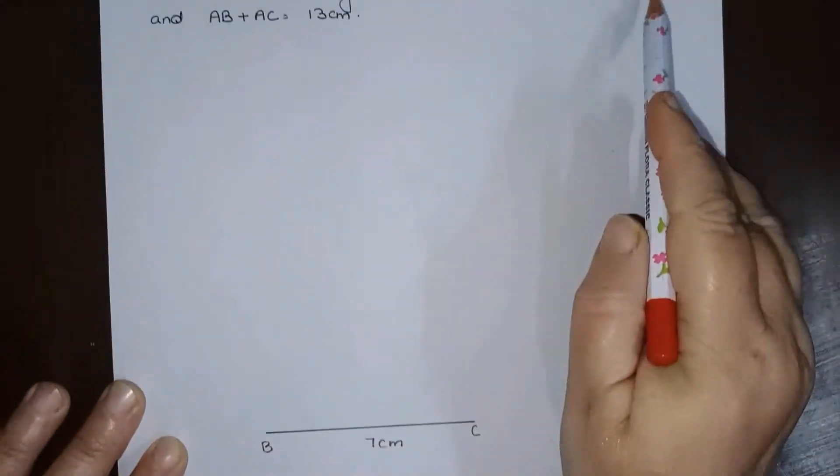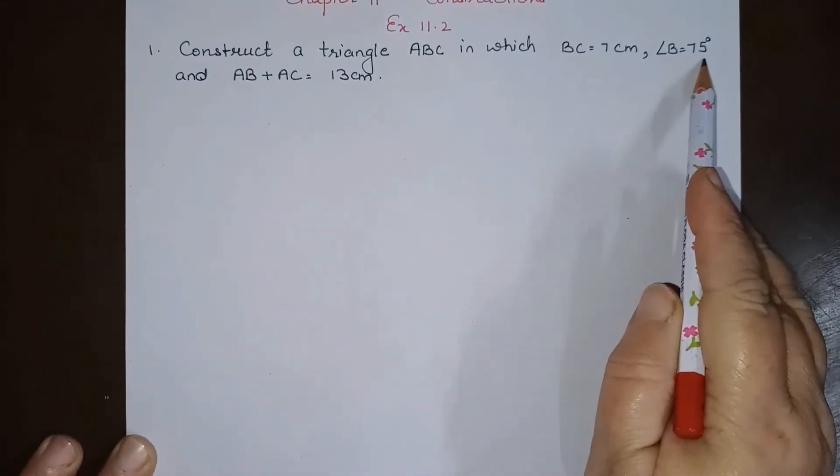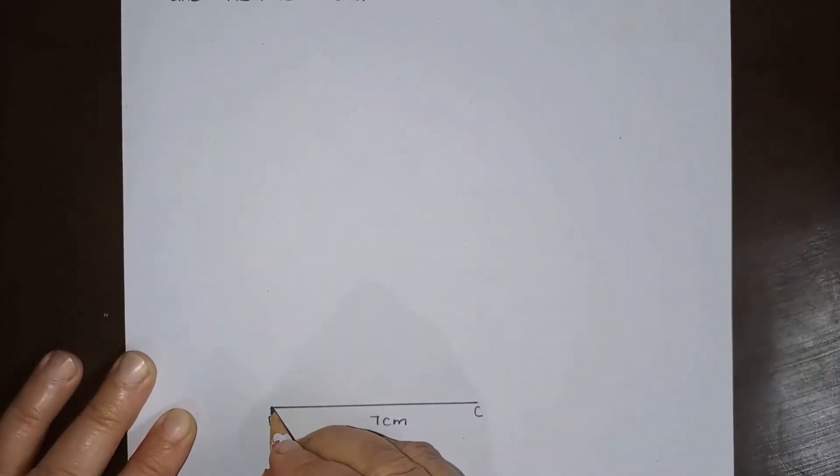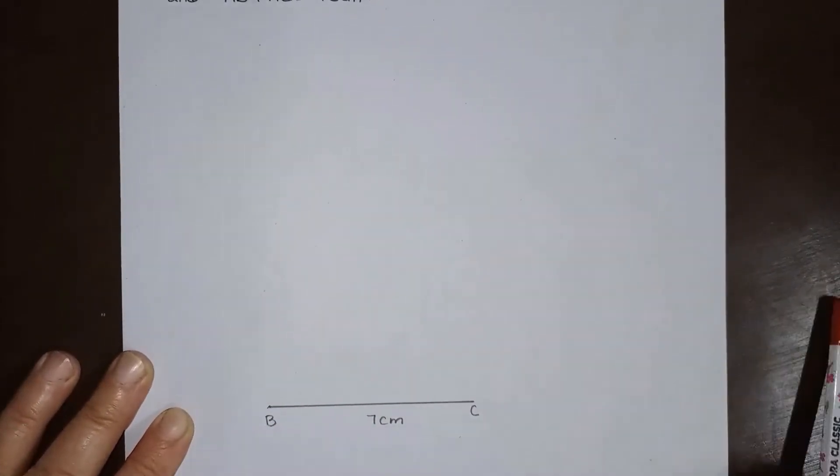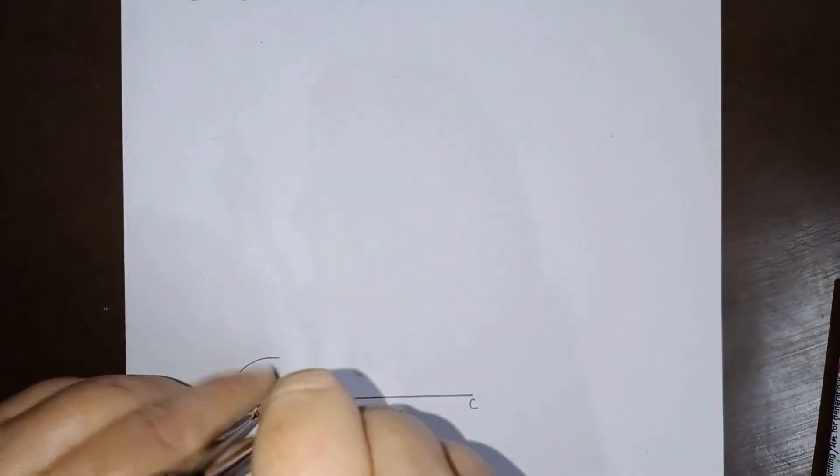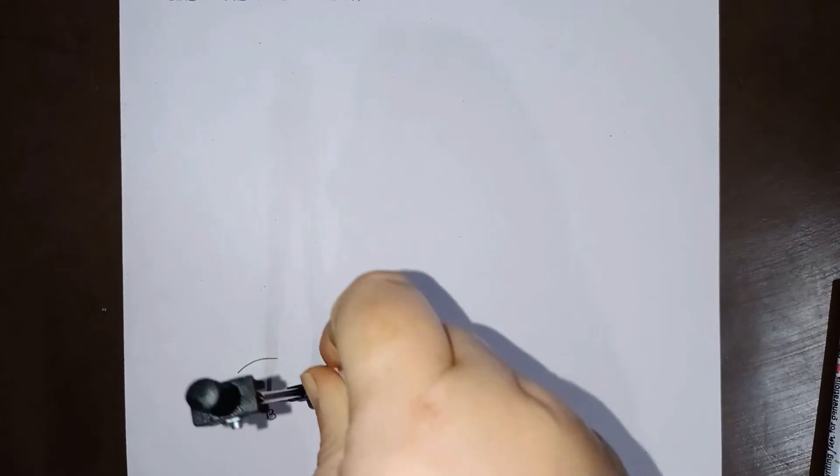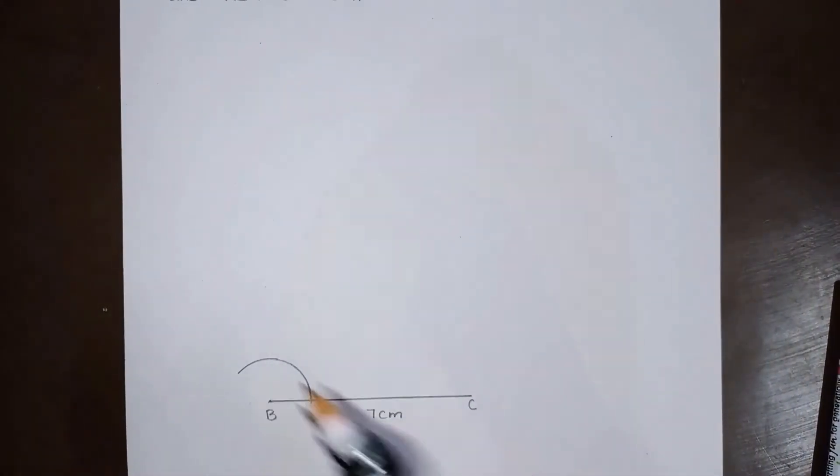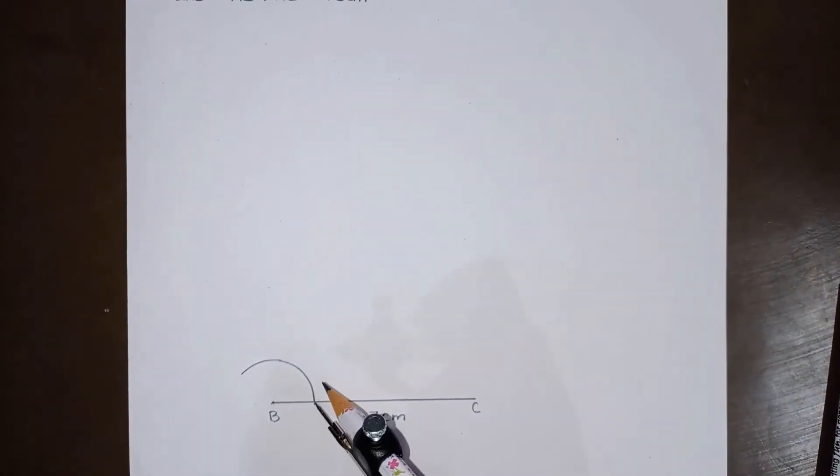Now after this, angle B is given to be 75 degrees. So at B we will draw an angle of 75 degrees using our compass. We will keep the compass at B. We have already learned how to draw angle of 75 degrees. To draw angle of 75 degrees, we have to first draw angle of 90 degrees.